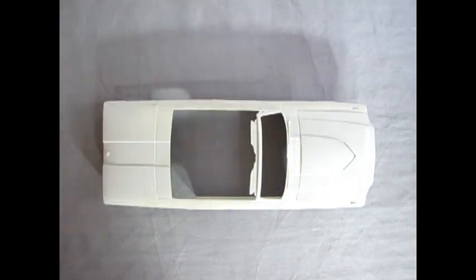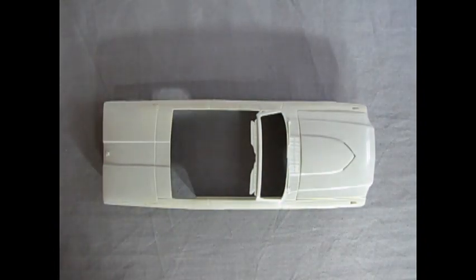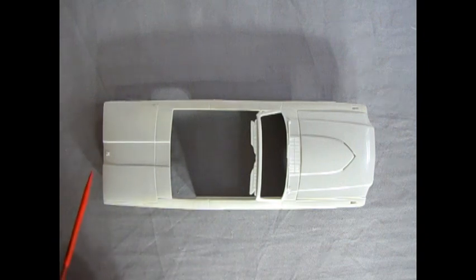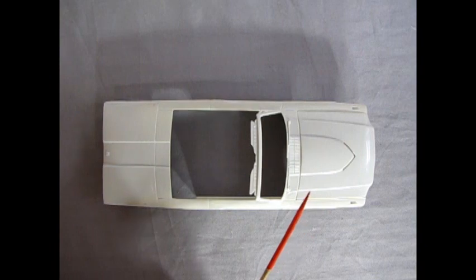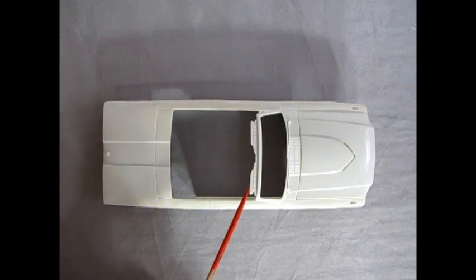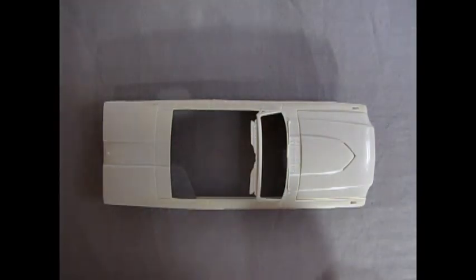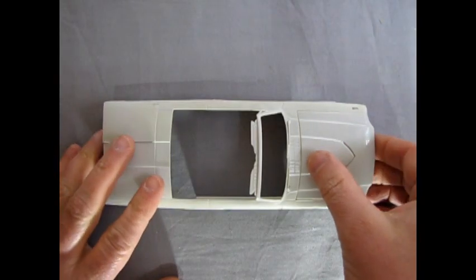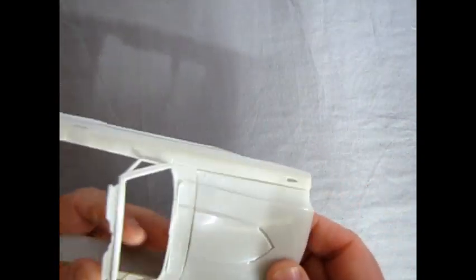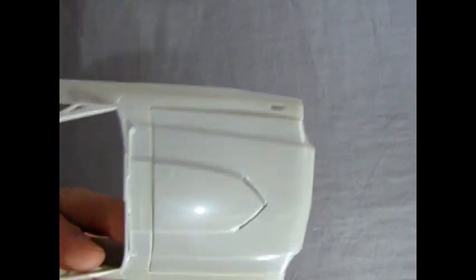So here we have our stock 66 Thunderbird. And as you can see, we've got the emblem here for the Thunderbird and the aforementioned hood. One thing that's nice about the convertible is that they actually did put in the sun visors in here. So that's a good thing. I'm just going to remove the hood. Oh, before I do that actually, there's one thing I had to do in this kit.